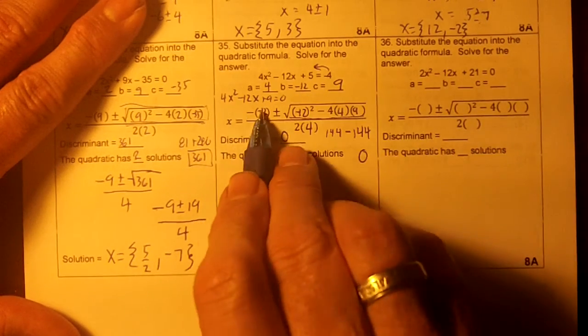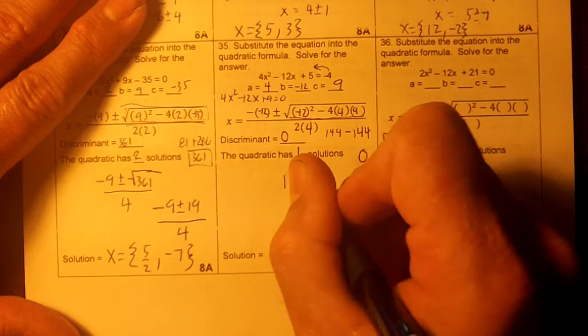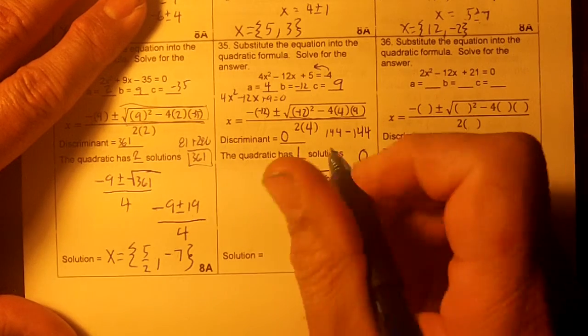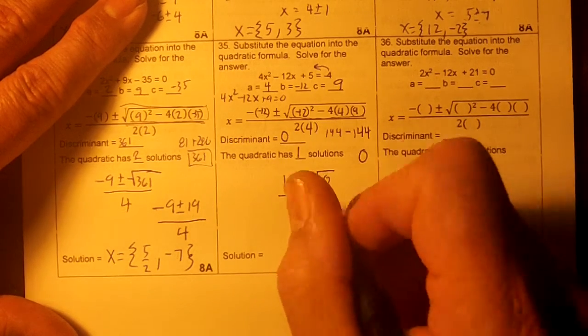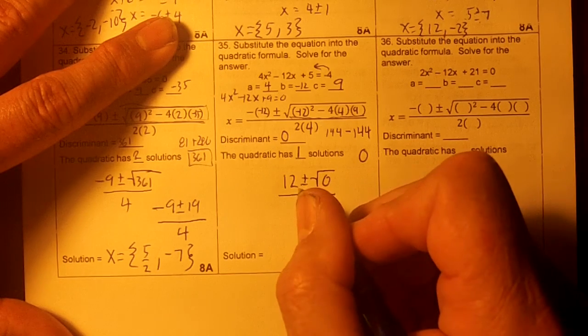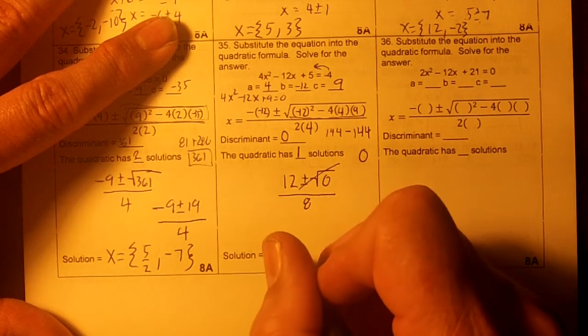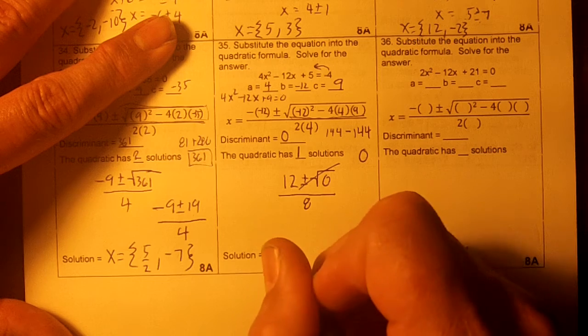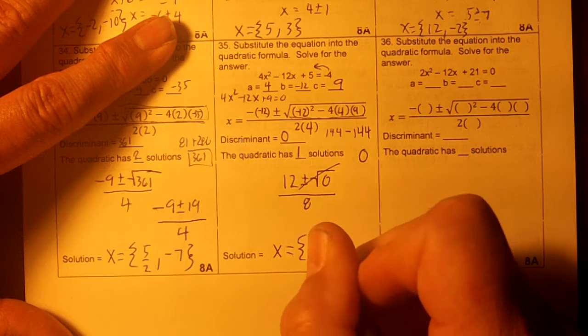Since the discriminant is 0, there's only one solution. So we're going to write down two negatives makes a positive. Plus or minus the square root of 0, all over 2 times 4 is 8. Okay, this goes out to 0. So 12 over 8 is just 3 over 2.